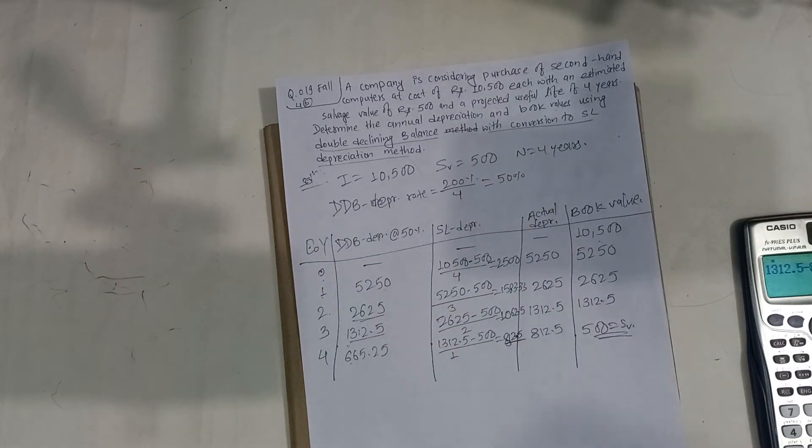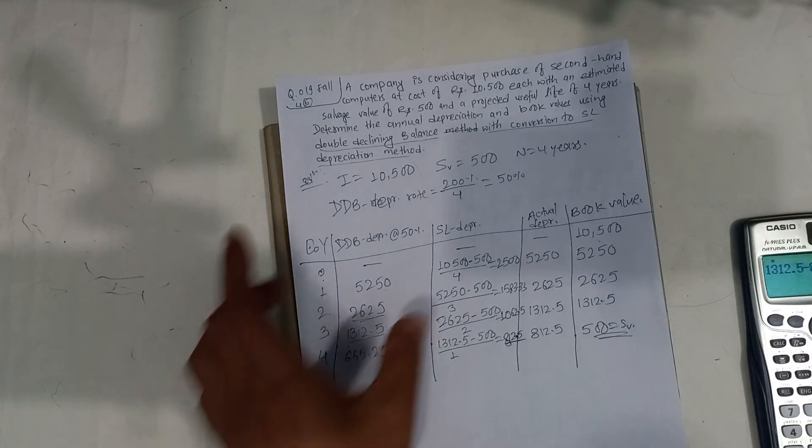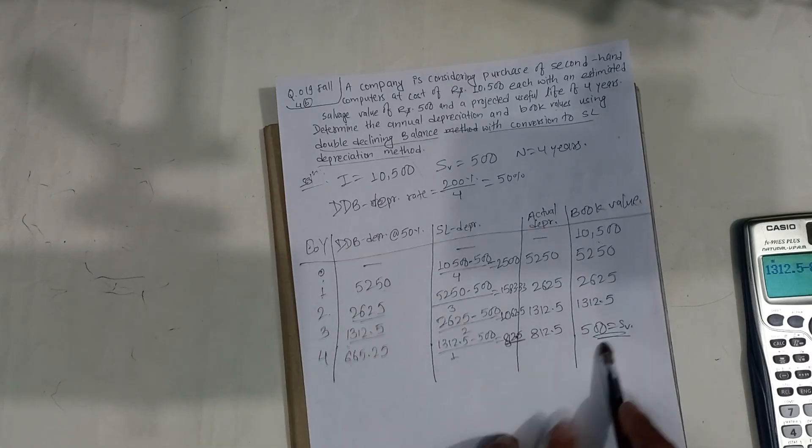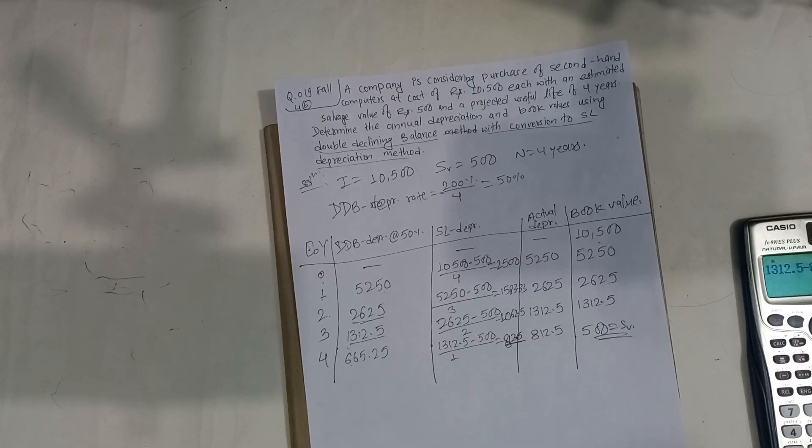So this is how we perform this operation. This method is double declining balance with conversion to SL depreciation method. Thank you.